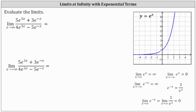We want to evaluate the limits. Let's begin by checking the form of the first limit, where we have the limit of the quotient as x approaches infinity. Before we do this, it might be helpful to write 3e to the power of negative x as 3 divided by e to the x, as well as 5e to the negative x as 5 divided by e to the x. So let's go ahead and do that.